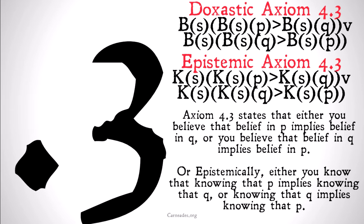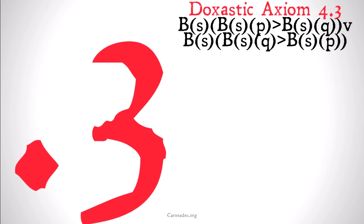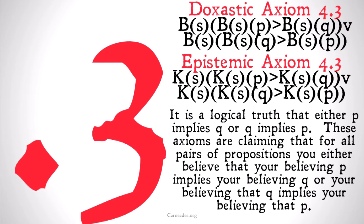If you're unfamiliar with the rules and tricks of logic, this may look like a very strange axiom. Why would you think that P implies Q or Q implies P? That's actually one of the laws of logic based on our definition of implication — check out the video on implication if you don't know about that. It is a logical truth that either P implies Q or Q implies P. These axioms are claiming that for all pairs of propositions, you either believe that believing P implies believing Q, or that believing Q implies believing P.